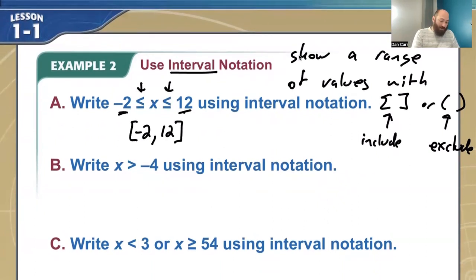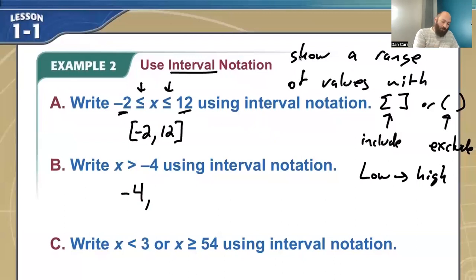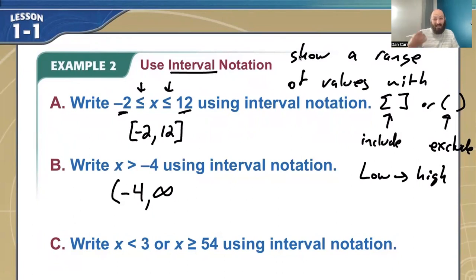The next one is x is greater than negative 4. The other thing to remember about interval notation is we always write them from lowest to the highest number. So if I say x is greater than negative 4, negative 4 is the lowest number it goes, and it goes up forever. We show that with our infinity symbol. Negative 4 is not included because it's a greater than, so that gets a parenthesis. Infinity is not actually a number, it's just a concept, so we can't actually close that off — we do that with a parenthesis as well. We always use parentheses around infinity symbols, either positive or negative.